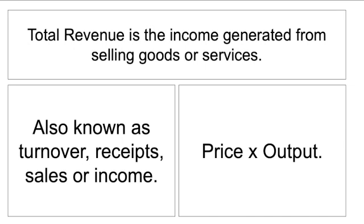To get started, let's have a look at total revenue. Total revenue is the income generated from selling goods or services. It's also known as turnover, receipt, sales, or income. When a company sells a product and money exchanges hands, that would be their revenue. When looking at total revenue, we're looking at the total income from selling all of their goods — their output. The formula is simply selling price times output or quantity sold.